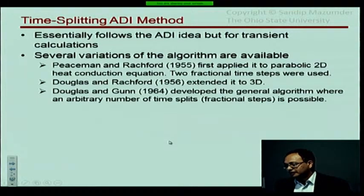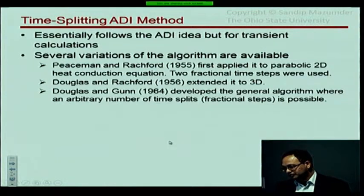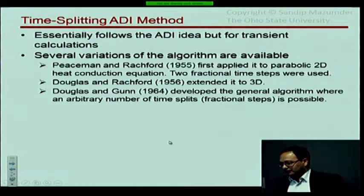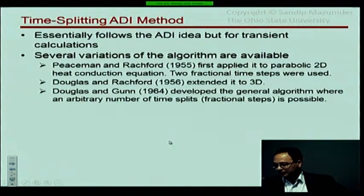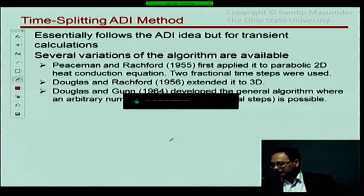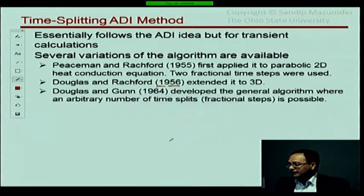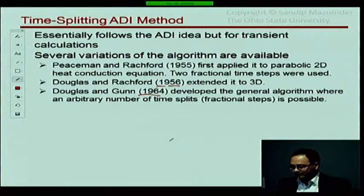There are several variations of the algorithm proposed in the past. The first was in 1955 by Peaceman and Rachford. Then Douglas extended the method to 3D in 1956, and finally in 1964 he generalized this method.